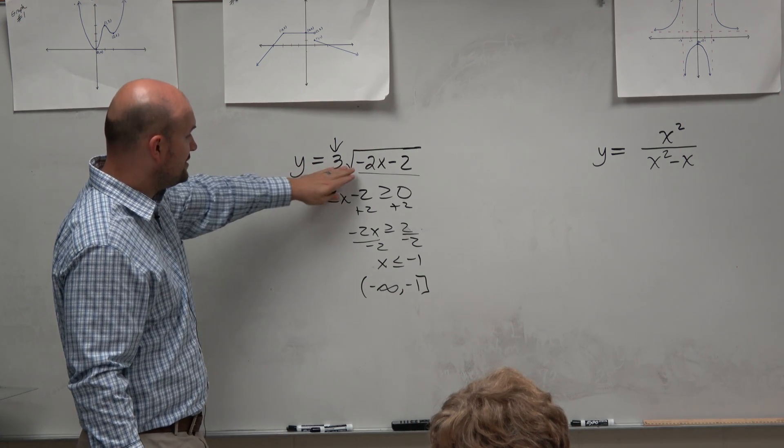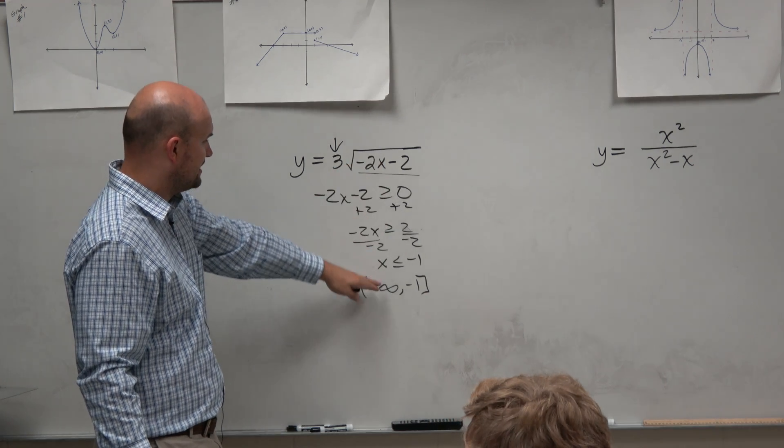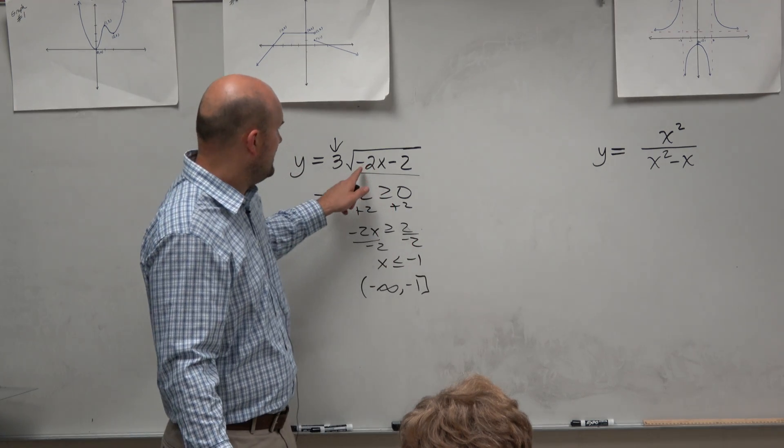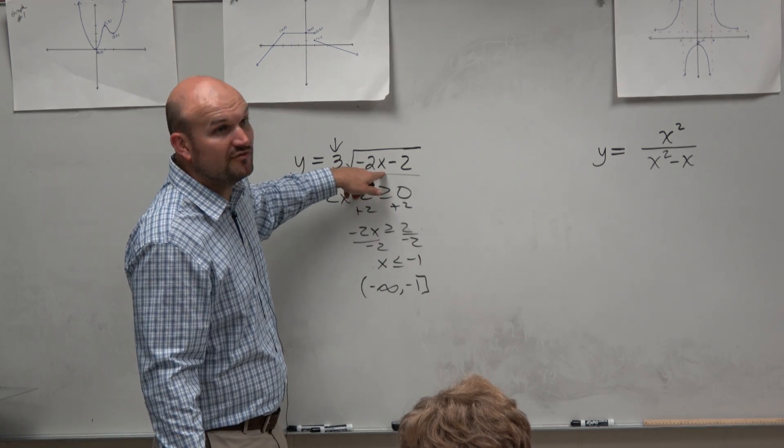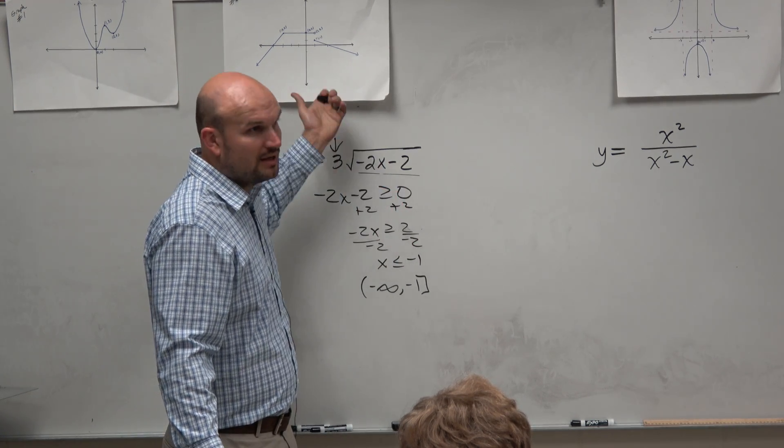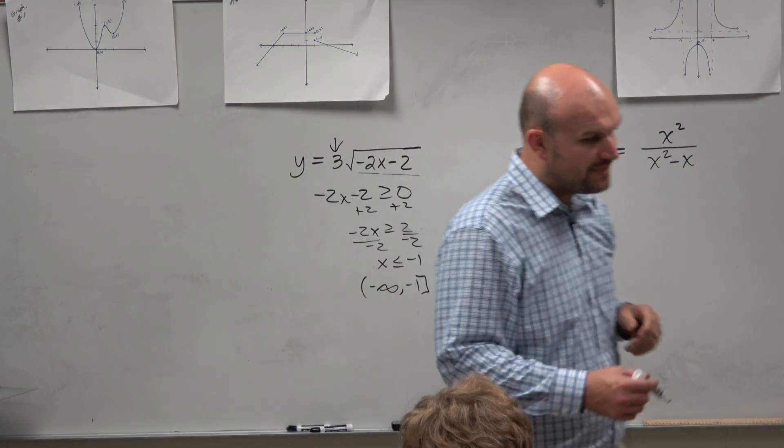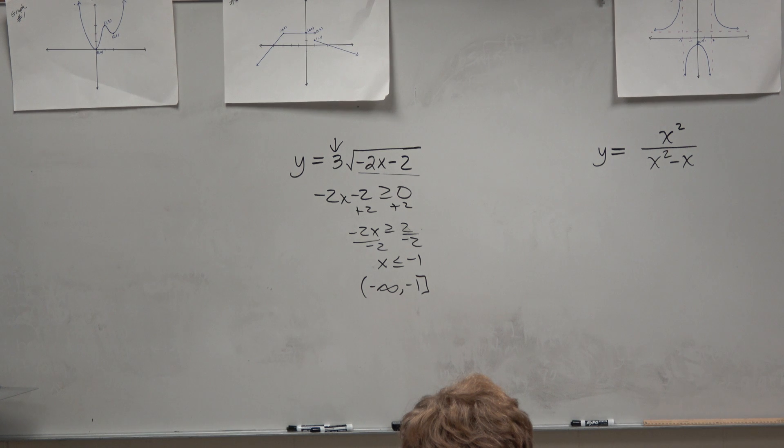All right? And again, you can confirm that. Does that make sense? So what are all the numbers between negative infinity and negative 1? Let's pick negative 2. Negative 2 times negative 2 is a positive 4. Positive 4 minus 2 is 2. I can take the square root of that. Right? That works. So that's a basic identification of the domain.